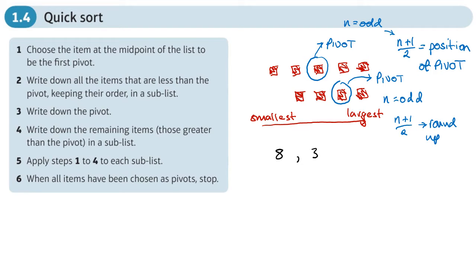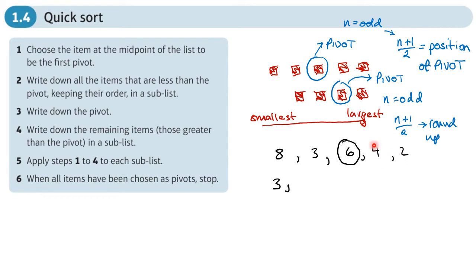Let's say we have: 8, 3, 6, 4, 2. The pivot is 6, as it's the number in the middle of the list. Any numbers already smaller than 6 stay where they are, so 3 stays. Then we move any other numbers smaller than 6 across the pivot — so 4 and 2 pivot across, keeping their order the same.